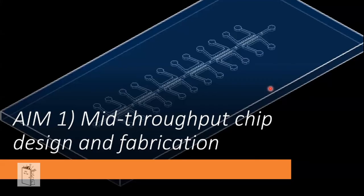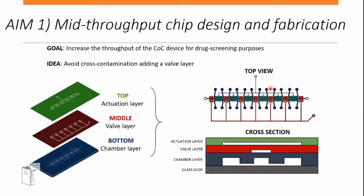Starting with the engineering design: the main objective was to increase the throughput of the cartilage-on-chip model for drug screening purposes. Since we have several chambers together, we want each to have independent space — no cross-contamination between chambers. The solution was to add a valve layer. As shown schematically, three different layers were developed using soft lithography techniques.